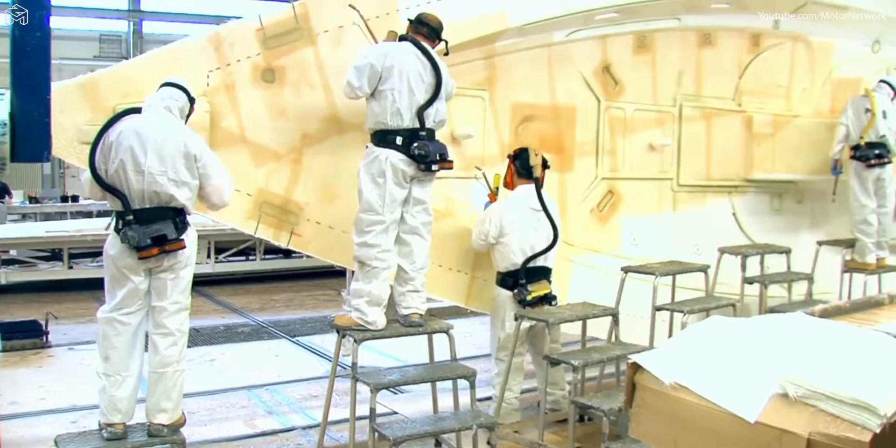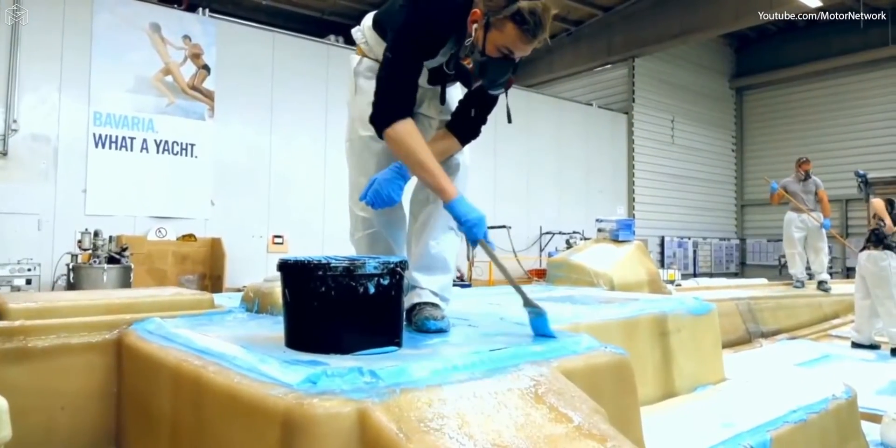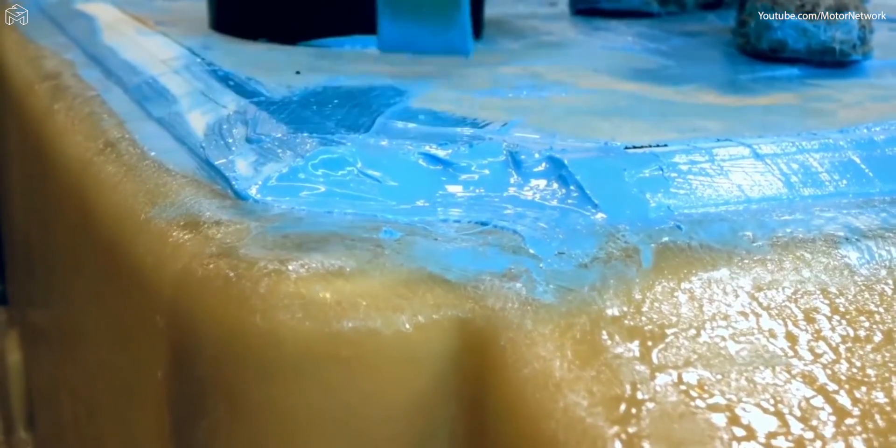Like the hull, the deck of the Bavaria also consists of a high tensile but light sandwich construction with foam inlays. The upper and bottom shells of the deck are laminated in different molds.